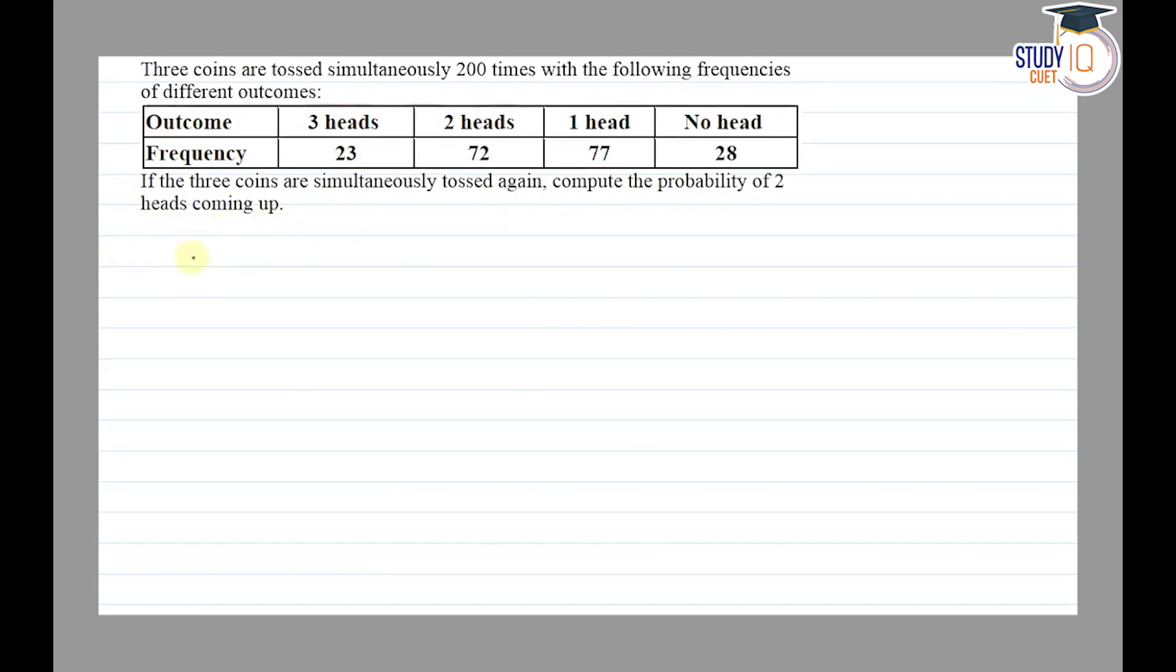So firstly, we have given the number of times 2 heads come up. So we have 2 heads coming up 72 times, and the total number of times the coins were tossed is 200.